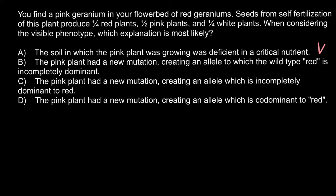We should consider answers B, C, and D. Answer B: the pink plant had a new mutation creating an allele to which the wild-type red is incompletely dominant. Answer C: the pink plant had a new mutation creating an allele which is incompletely dominant to red. Answer D: the pink plant had a new mutation creating an allele which is codominant to red.